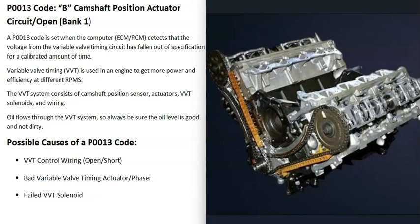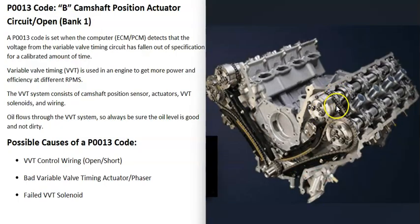Depending on the engine, you'll have either a single overhead cam or a dual overhead cam. A single overhead cam engine has just one cam on each bank. A dual overhead cam engine has two cams on each bank — an intake cam on the intake side called the A camshaft, and a camshaft on the exhaust side called the B camshaft. With a P0013 code, the B camshaft is located on the exhaust side of bank one.